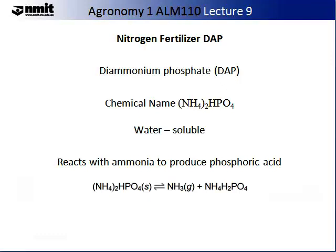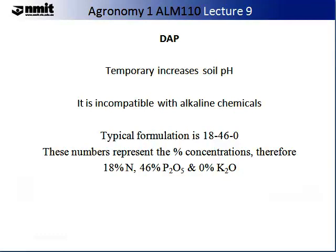When DAP comes into contact with the soil, it temporarily increases the soil pH. It is incompatible with alkaline chemicals. You typically see it for sale with a commercial formula that may look something like 18-46-0. These numbers represent the percent concentrations of the compounds DAP contains — 18% nitrogen, 46% phosphorus, and in this case 0% potassium.